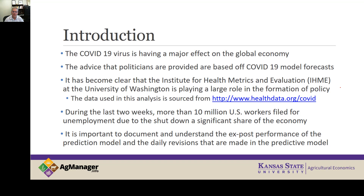The data used in this analysis is sourced from their website. To give an indication of just the magnitude of how this is affecting the economy, during the last two weeks, more than 10 million U.S. workers filed for unemployment due to a shutdown of a significant share of the U.S. economy. It's important to document and understand the ex post performance of the prediction model and the revisions that are made in that predictive model.